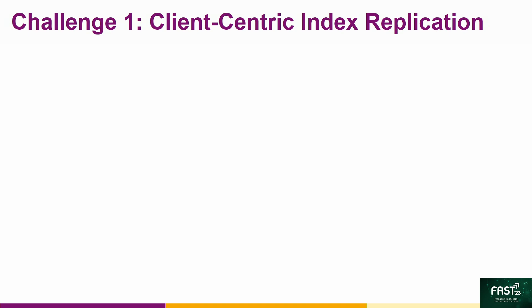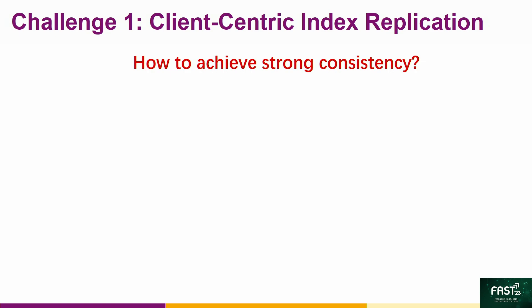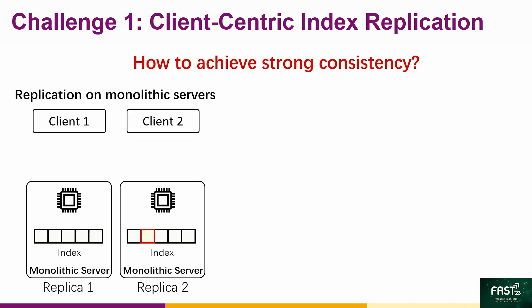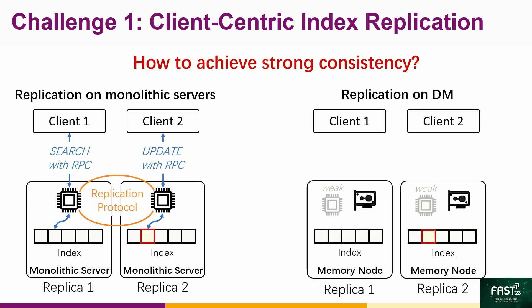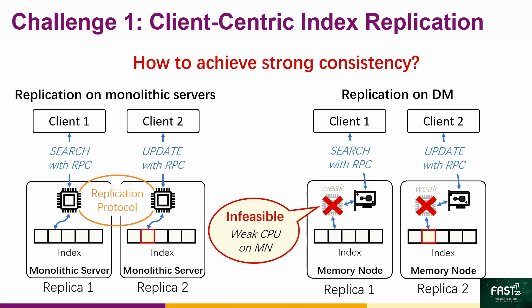The first challenge is the client-centric index replication. The index has to be replicated on multiple memory nodes to survive memory node failures. Strong consistency is the most widely adopted correctness standard for replication. However, existing replication approaches are designed for monolithic servers — they assume each data replica is exclusively managed by the CPU of a storage server and heavily rely on the CPU to execute replication protocols. Such an approach is infeasible on DM because the compute power on memory nodes is too weak to execute the replication protocol on the data path.